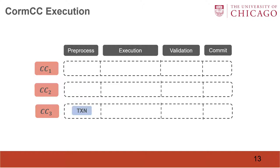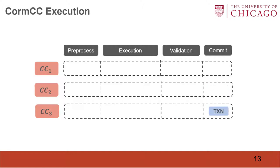A transaction first goes through the preprocess phase of all protocols. For example, in PartCC, it needs to request and obtain all partition locks before its normal execution. In the execution phase, we use a specific protocol to process each operation depending on which record it needs to access. Then it goes through the validation phase and the commit phase of all protocols respectively.